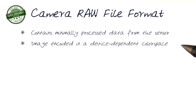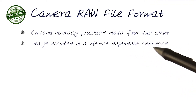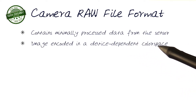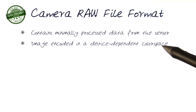The images in a camera raw format are encoded in a device-dependent color space. Sometimes it's a proprietary color space, but each camera has a specific form of a color space.